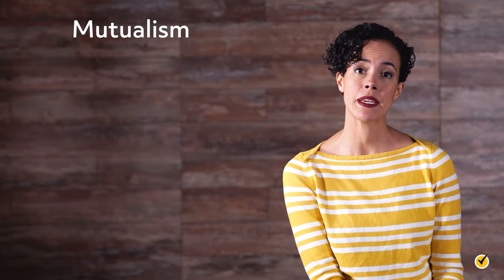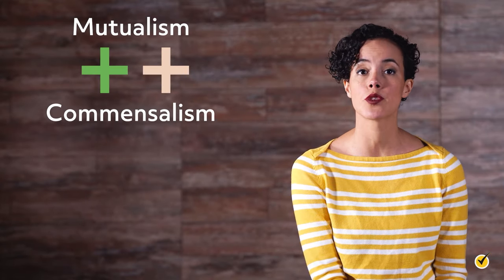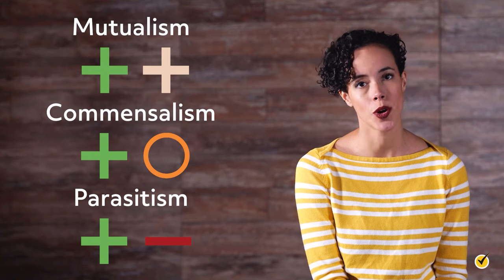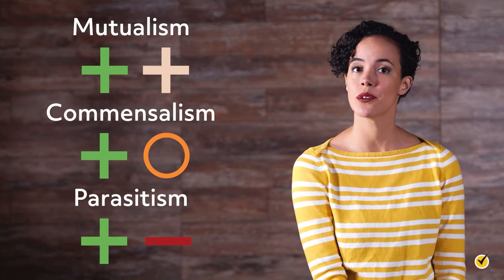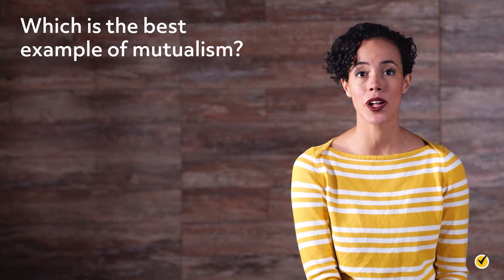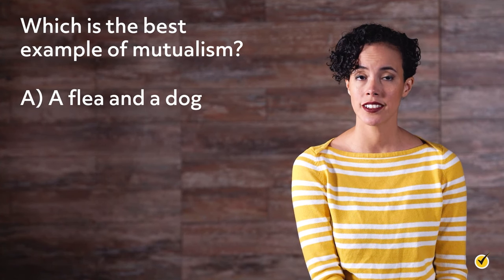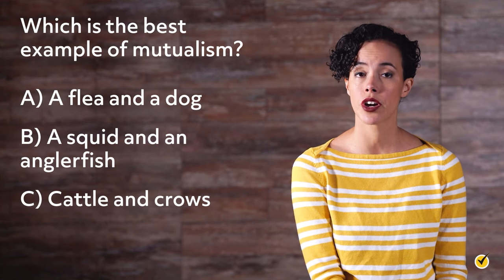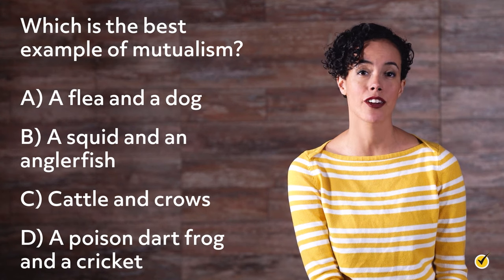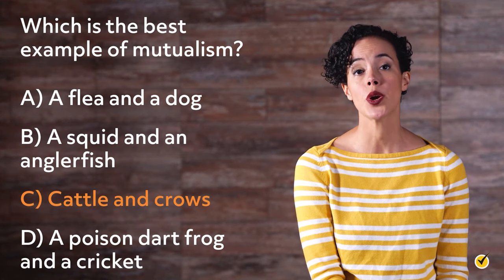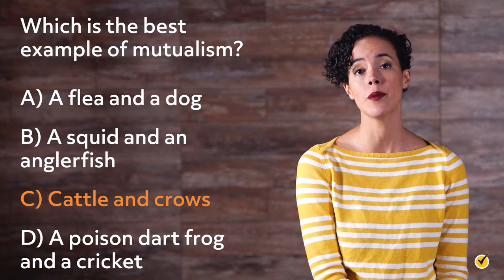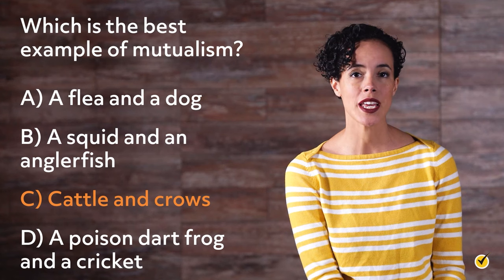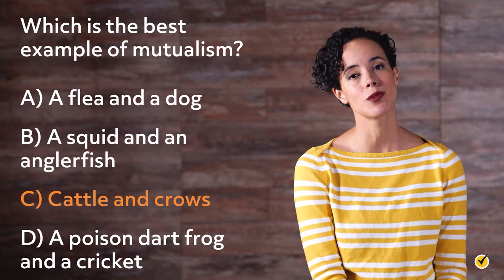To review: mutualism is where both organisms benefit, commensalism is where one benefits and the other is unaffected, and parasitism is where one benefits and the other is harmed. Here's a review question: Which is the best example of mutualism? The answer is C. Crows and other birds will get a free meal by eating insects and fleas off of the backs of cattle, and cattle will get a free cleaning. Both the crows and the cattle benefit, so that makes this relationship mutualistic.